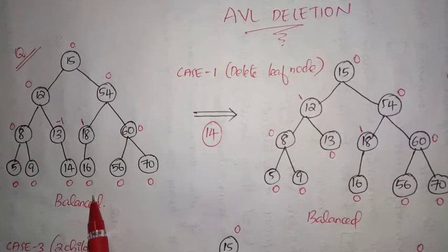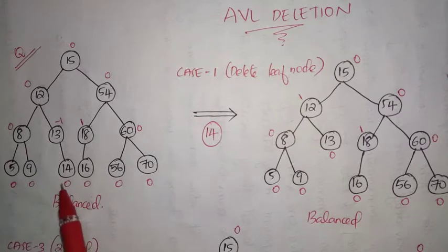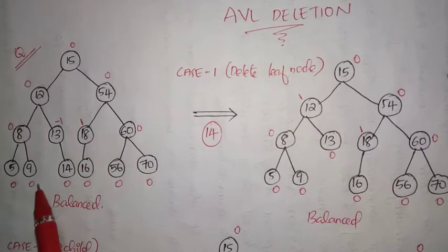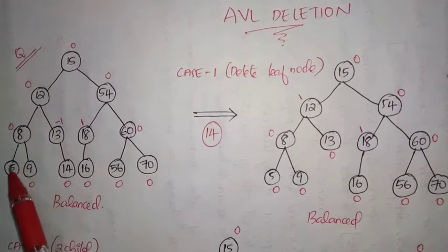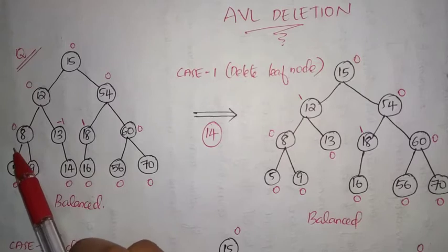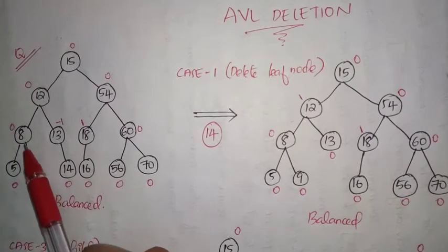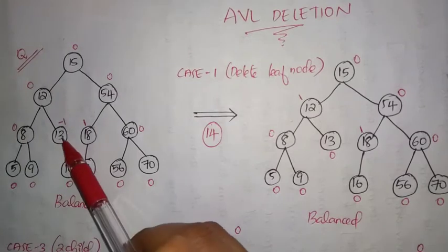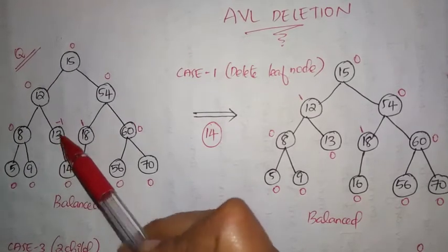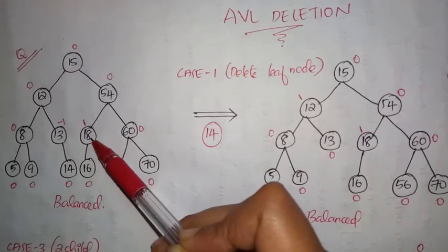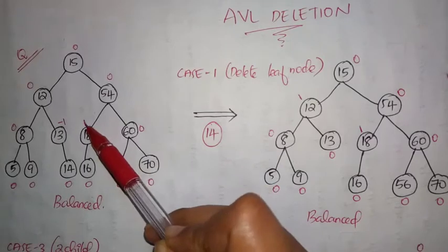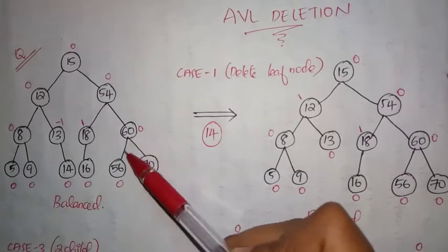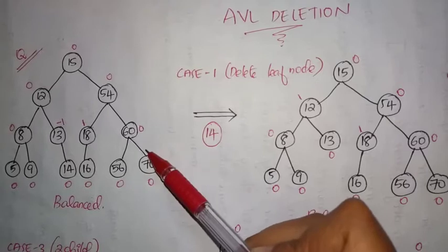Here I have taken a balanced AVL tree as an example, and the balancing factor of each and every node is written. The balancing factor of leaf nodes will always be zero. In this case, height of left subtree 1 minus height of right subtree 1, so 1 minus 1 equals 0. In another case, height of left subtree 0 minus 1 equals minus 1. In this case, height of left subtree 1 minus right subtree 0 equals 1. And here, height of left subtree 1 minus right subtree 1 equals 0.